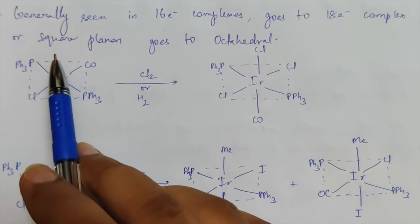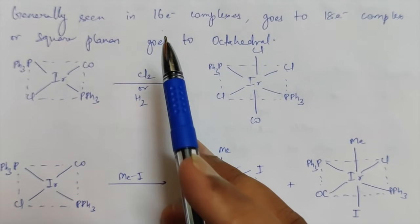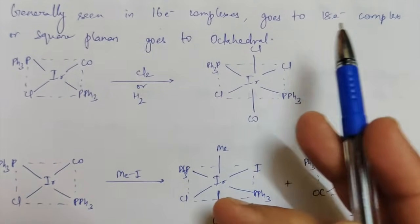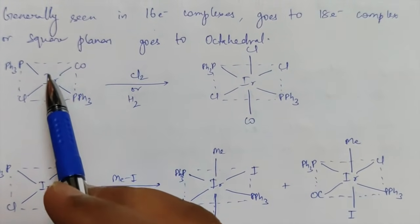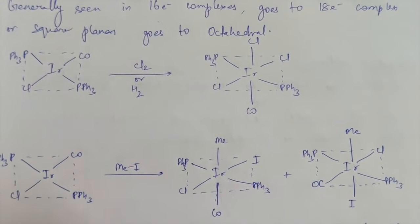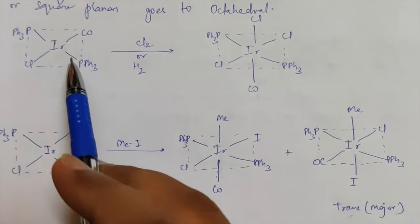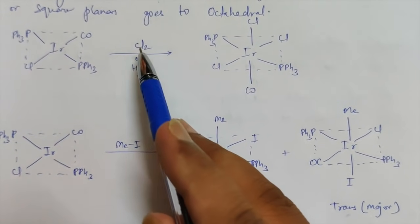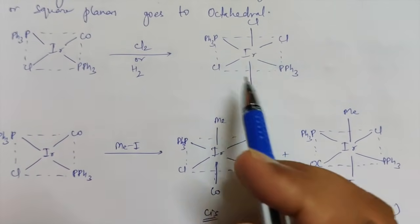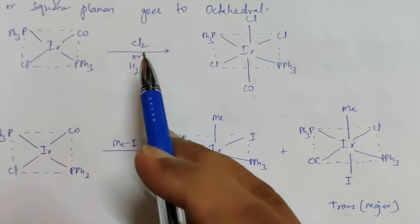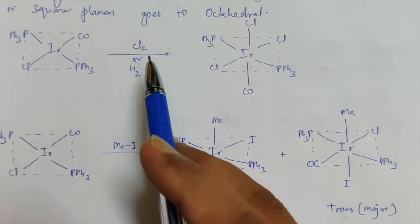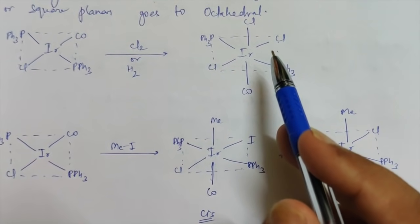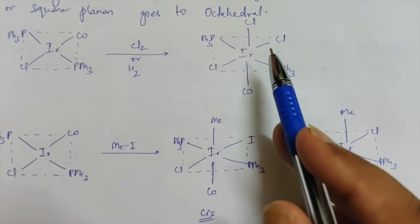Oxidative addition is generally seen in 16-electron complexes, and these 16-electron complexes convert themselves into 18-electron species, or square planar converts itself into octahedral species. As you can see in this example where you have an iridium complex — it's a square planar 16-electron species. When you treat it with Cl2, two chlorine ions will come and bind to iridium giving you an octahedral 18-electron species.